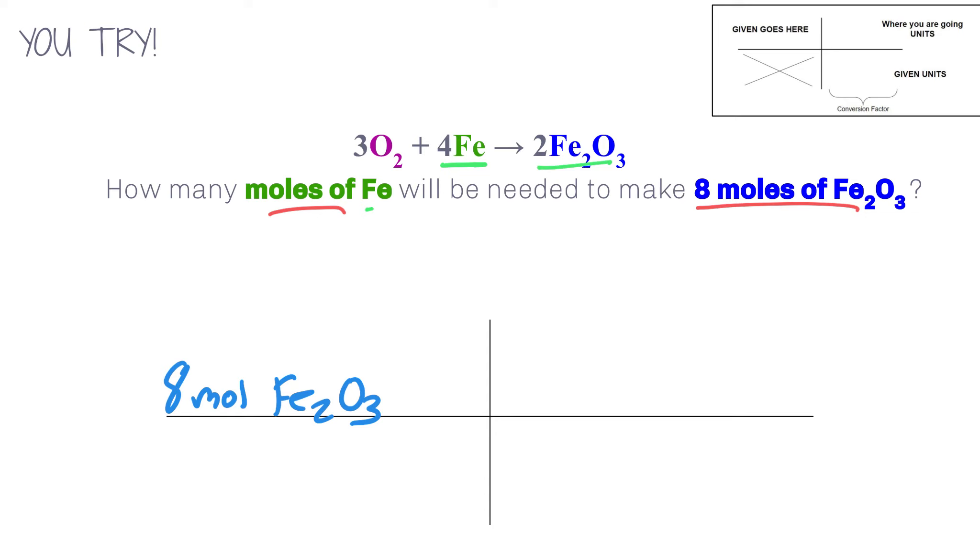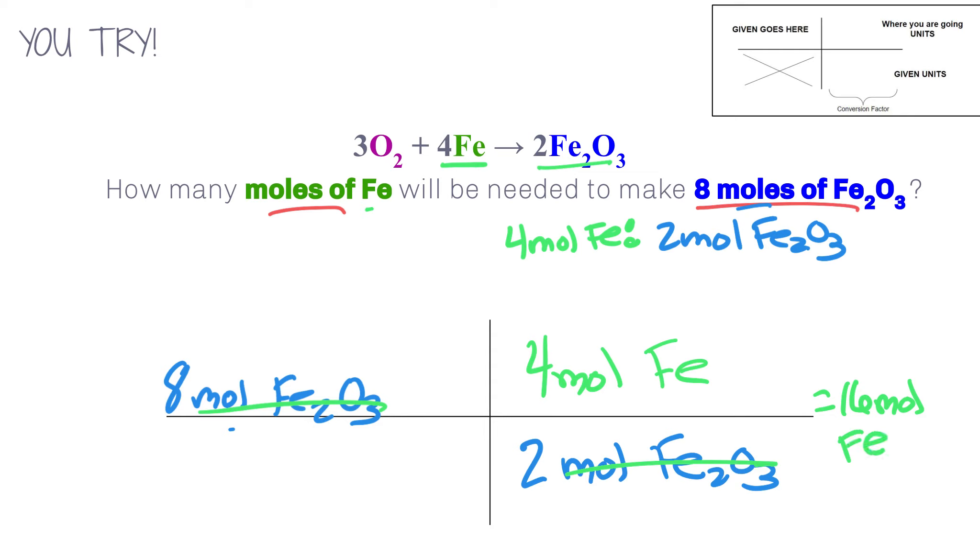We have 4 moles of Fe to 2 moles of Fe2O3. So our relationship is 4 mole Fe to 2 mole Fe2O3. So because we are starting with moles of Fe2O3, on the bottom here I'm going to write 2 mole Fe2O3, and I'm getting that from our conversion factor. Then, on the top, I have 4 mole Fe. Fe2O3 cancel. So we have 8 times 4, which is 32, divided by 2 is 16 moles Fe, as our answer.